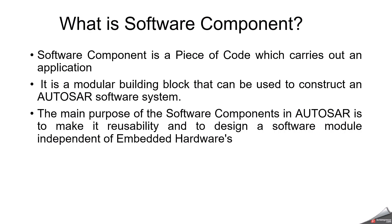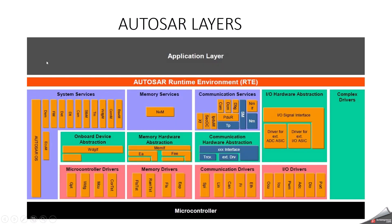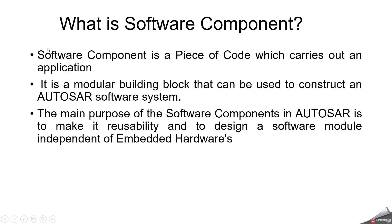What is a software component? A software component is a piece of code which carries out an application. It will be designed to carry some smaller application — for example, you have to read the VIN number and provide it to other modules, or you want to read the mileage and provide it to other modules, or read the system time. It is a modular building block used to construct an AUTOSAR software system. The main purpose of software components in AUTOSAR is reusability and to design a software module independent of embedded hardware.